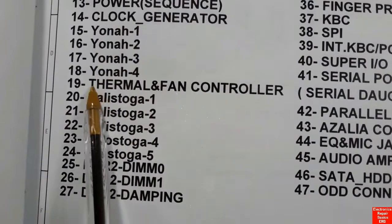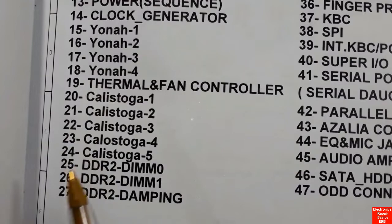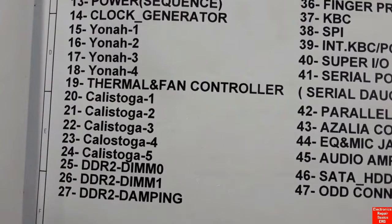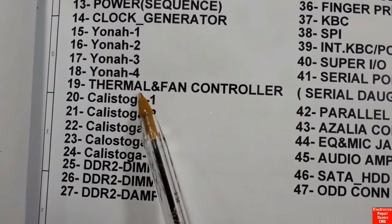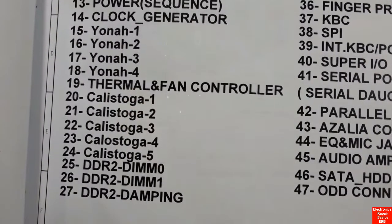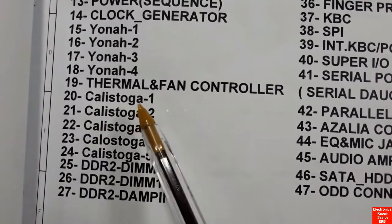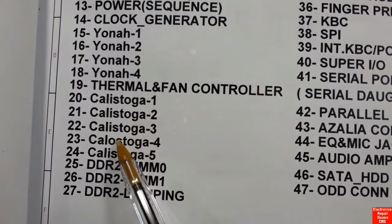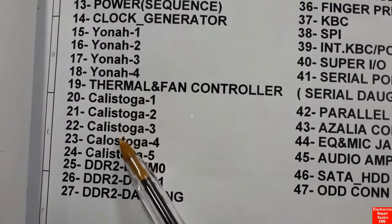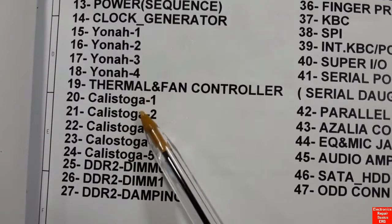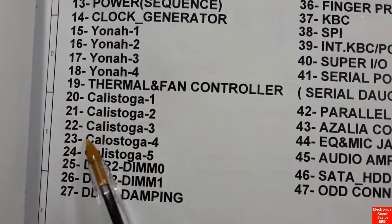In page nineteen we have the thermal and fan controller. Basically this is the fan control IC — you will find an IC with eight pins that controls the speed of the fan based on the temperature of the CPU. The controller will control the speed of the fan accordingly.